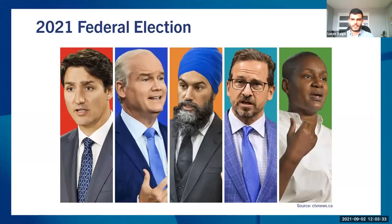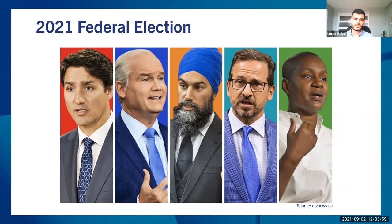So who are the party leaders in this election? It's not too different from last time around in 2019. You have Mr. Justin Trudeau, who's the prime minister and also leader of the Liberal Party of Canada. Over to his right, Arnold Toole, leader of the Conservative Party. The NDP leader is Mr. Jagmeet Singh. Mr. Blanchet is the chef du Bloc Québécois. And last but not least, Ms. Annamie Paul, who's the leader of the Green Party.